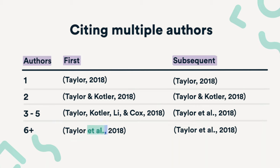Don't forget a comma! In the seventh edition, the in-text citation for works with three or more authors is shortened right from the first citation using et al. Check out this video if you're interested to see what has changed in the seventh edition.